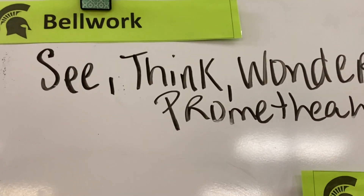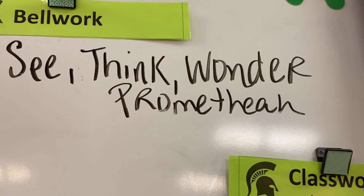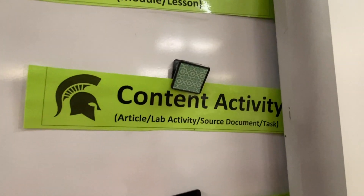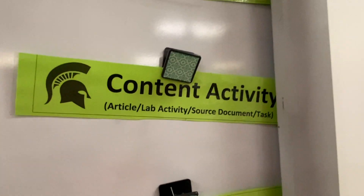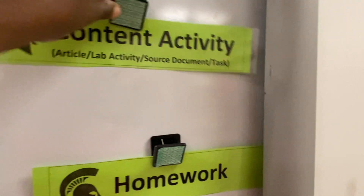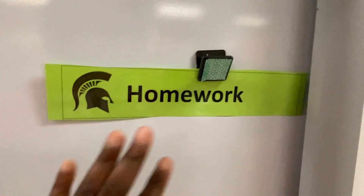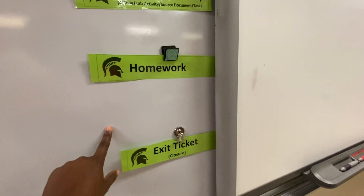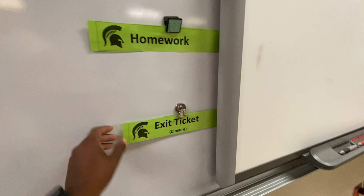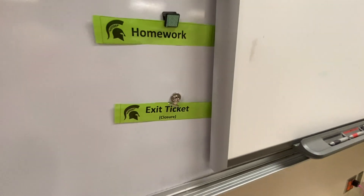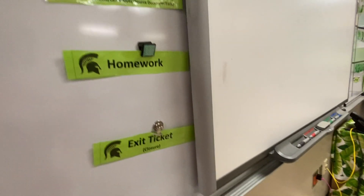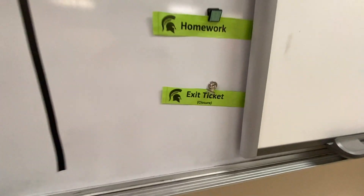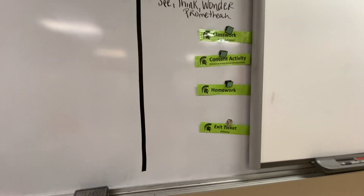Usually when we first start a lesson we do a 'See, Think, and Wonder' on the Promethean board. Classwork is the module. Content activity is where we either do an article, a lab, a source document, or some kind of task. Homework is always up here so students can know what we're doing that night and put it in their agenda when they first come in. The exit ticket or closure ties the entire lesson up so I can understand that they actually know what we talked about and why we talked about it.